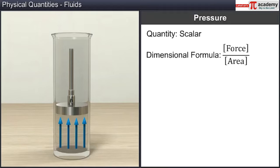Dimensional formula of pressure is the ratio of dimensional formula of force to that of area. Dimensional formula of force is M L T^-2. Dimensional formula of pressure is M L T^-2.